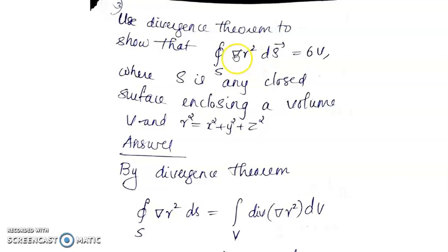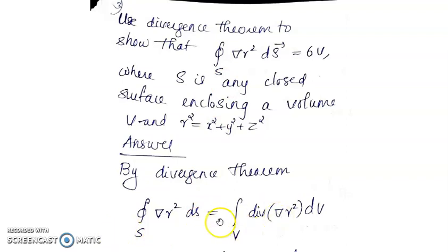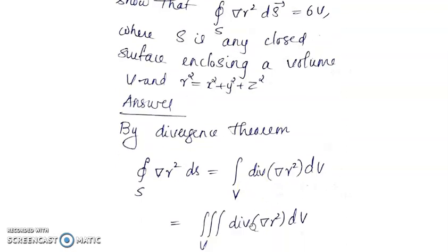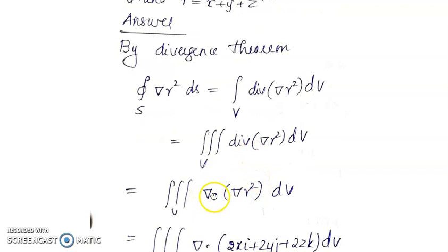By the Divergence Theorem, the surface integral equals the triple integral of ∇·(∇R²) dV. Now ∇R² is the gradient of R², where R² = x² + y² + z², so ∇R² = 2xi + 2yj + 2zk. Taking the divergence of that: the partial derivative with respect to x gives 2, with respect to y gives 2, and with respect to z gives 2.